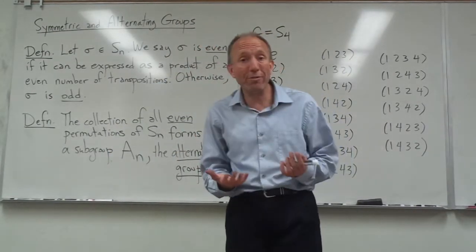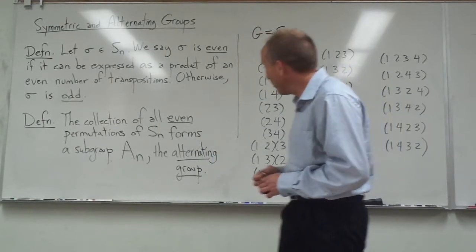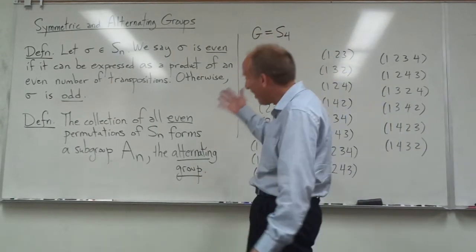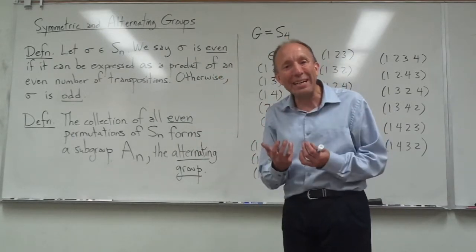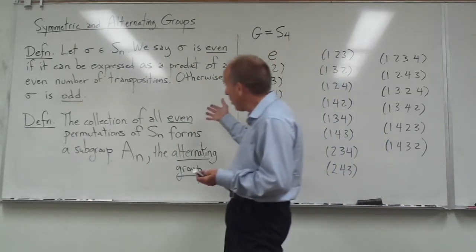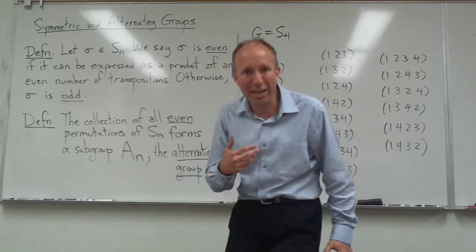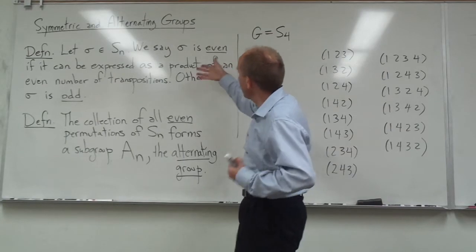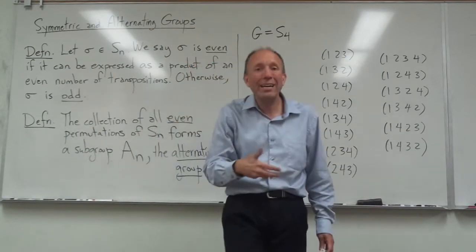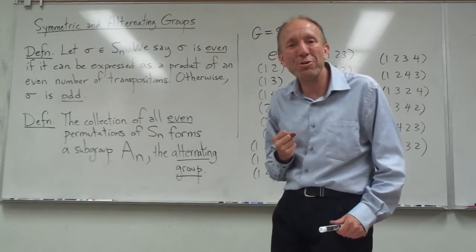In part one of this two-part series, I had just defined the alternating group for you. It is that subgroup of Sn, consisting of all of the even permutations. Even permutation is just an element that can be expressed as a product of an even number of transpositions.